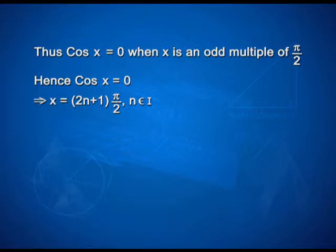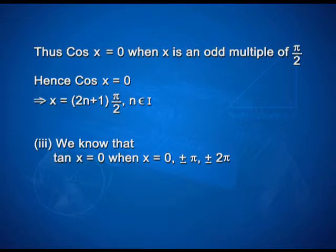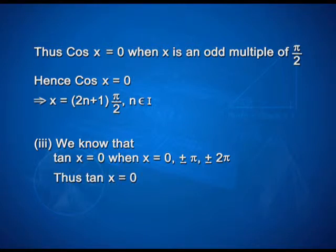For tan x = 0, this holds when x = 0, ±π, or ±2π. This implies x = nπ, where n belongs to the integers.